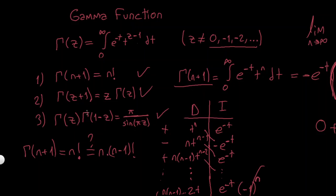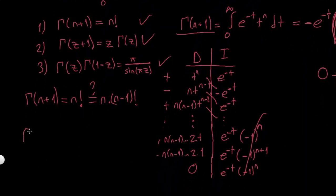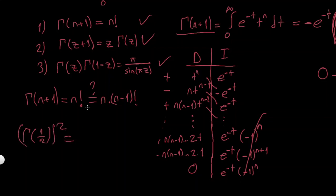As I said at the beginning, I'm not going to prove the third property (the reflection formula), but we can use it to find gamma(1/2), which is its main application. If I put z = 1/2, it gives gamma(1/2)*gamma(1/2) = gamma(1/2)^2 = π / sin(π/2) = π/1 = π. Taking the square root of both sides, gamma(1/2) = √π.